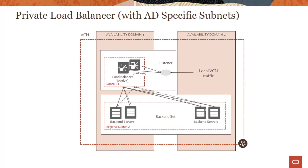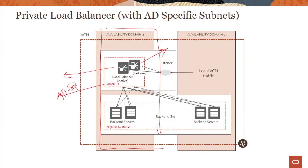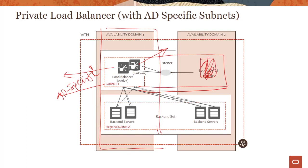In the case of AD-specific subnets, both the active and failover load balancers are in the same AD. We still have two copies, but they're both running in the same AD. This is why we advise you to create a regional subnet — so the failover copy can be created in another AD. With AD-specific subnets, at least for the private load balancer, the failover copy gets created in the same AD.